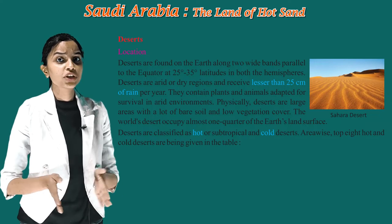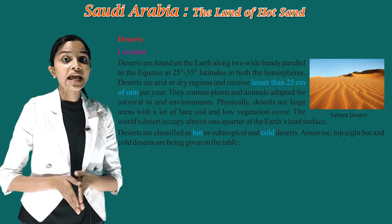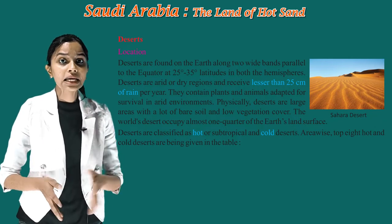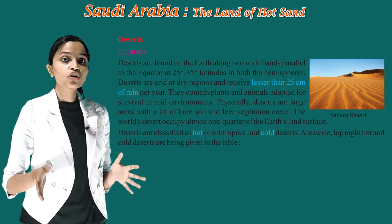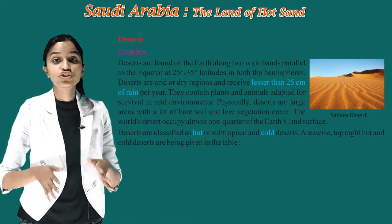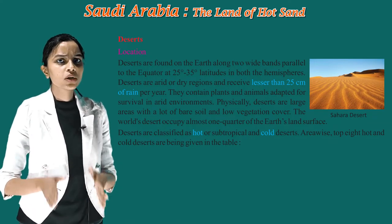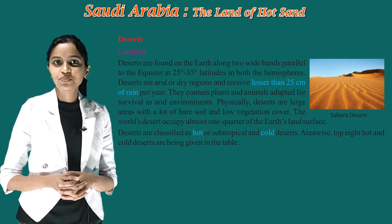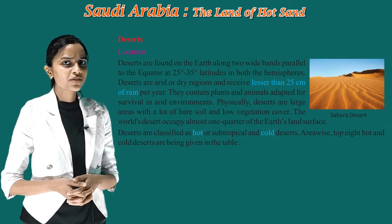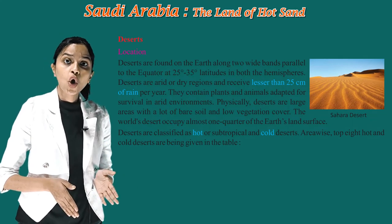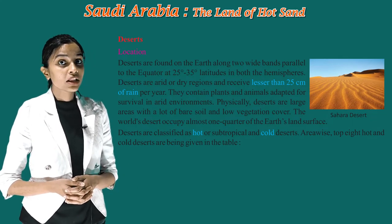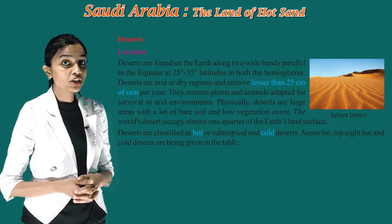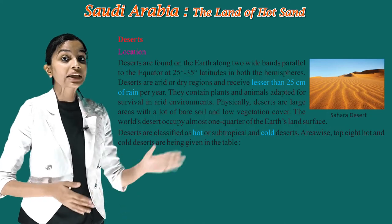Deserts contain plants and animals adept for survival in arid environments. Physically, deserts are large areas with a lot of bare soil and low vegetation cover. The world's deserts occupy almost one quarter of the earth's land surface. Deserts are classified as hot or subtropical and cold deserts.